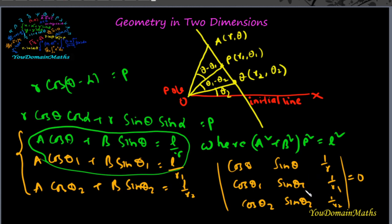This is the equation of a straight line passing through the two points P and Q. We can easily verify that the two equations found by the two methods are identical. Thank you very much.